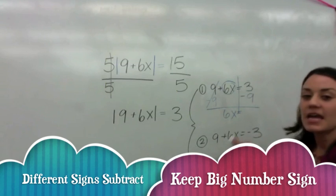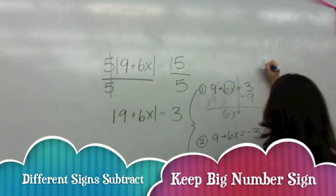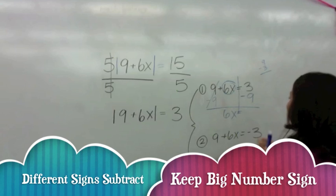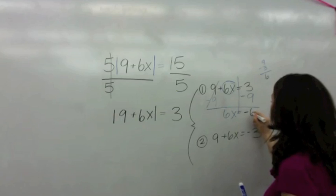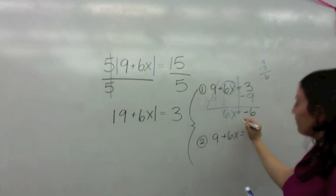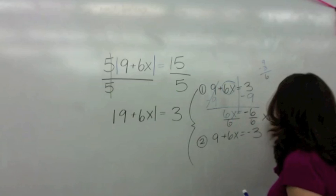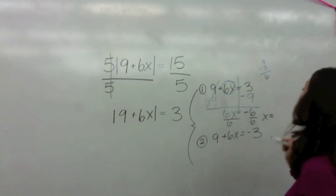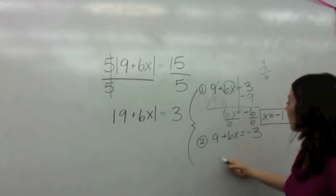Okay, we have different signs, don't we? So we say different signs, subtract. So you say, what is nine minus three? That is six. But what is the sign of the bigger number? The bigger number is negative. So it's going to be negative six. Then divorce divide, divide by six. What is X? Negative six divided by positive six. Negative divided by a positive is negative one.